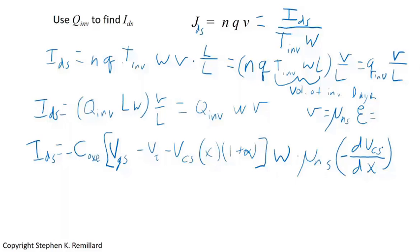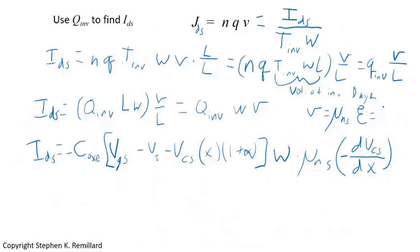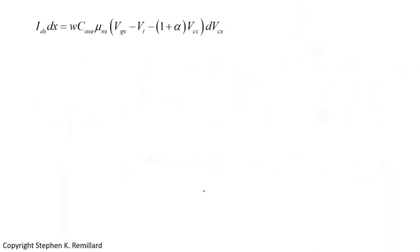Importantly, I_DS cannot change as you move along the channel — continuity requires the same number of coulombs per second passing every cross-section, otherwise charge would accumulate or be destroyed. So I_DS is a constant. Rearranging, we bring dx to one side: I_DS * dx equals W * C_oxide * mu_nS times (V_GS minus V_T minus (1 + alpha) * V_CS) times dV_CS. All quantities except V_CS are constants.